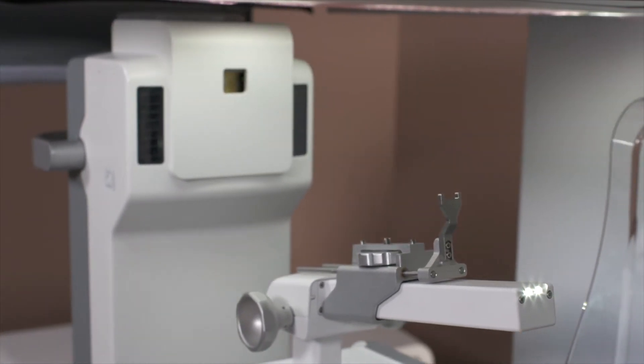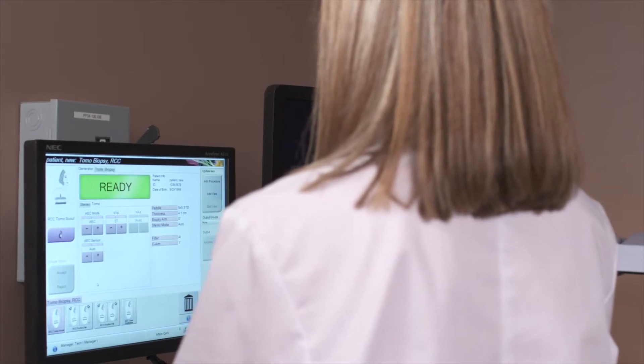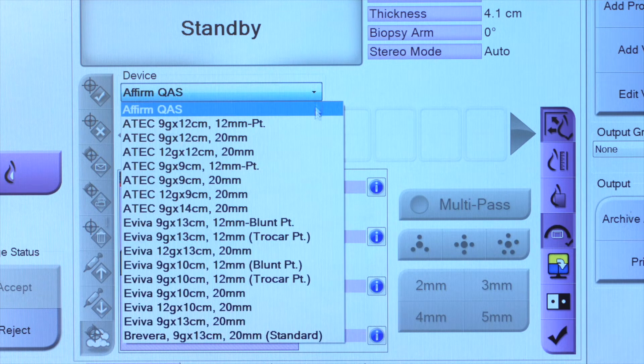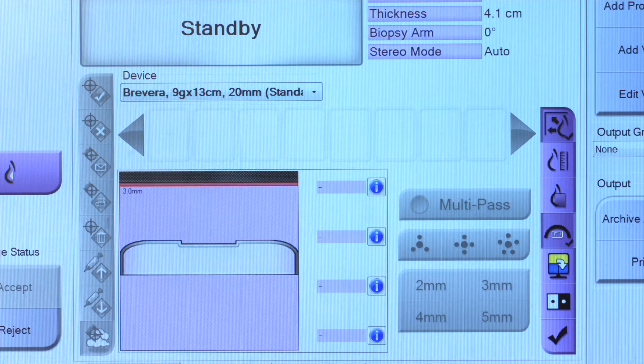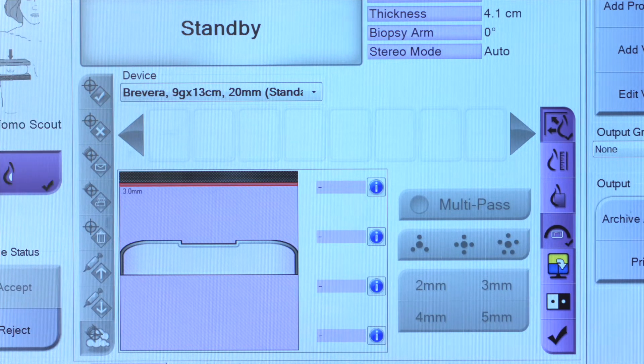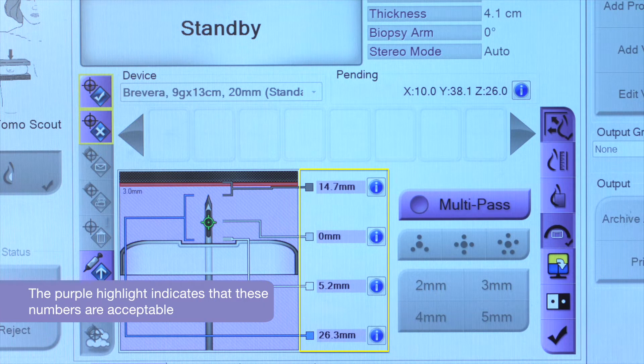On the Affirm Prone Biopsy System, a stereo pair or TomoScout may be taken. The Brevera breast biopsy device is chosen from the list programmed on the acquisition workstation. The system will use the selected device to calculate all safety margins during the procedure.